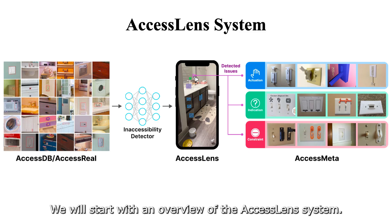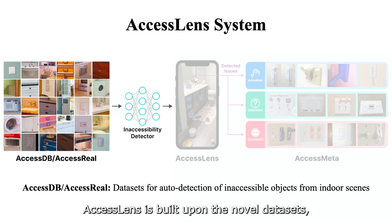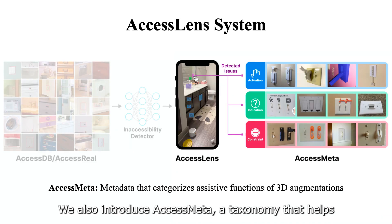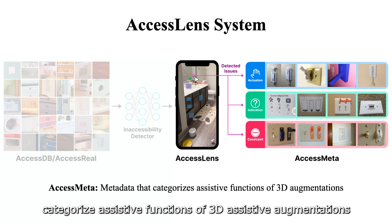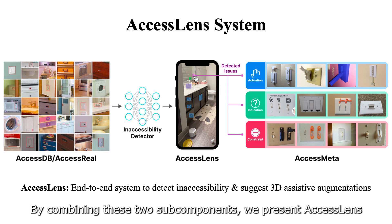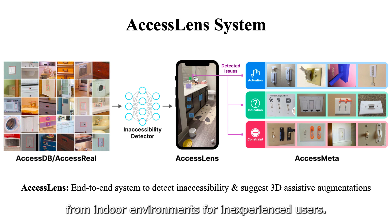We will start with an overview of the XS Lens system. XS Lens is built upon the novel datasets, XS DB and XS Real, to train an inaccessible object detector for indoor scenes. We also introduce XS Meta, a taxonomy that helps categorize assistive functions of 3D assistive augmentations, thus supporting users in obtaining tailored suggestions for their environments. By combining these two sub-components, we present XS Lens, an end-to-end system that detects inaccessibility from indoor environments for inexperienced users.